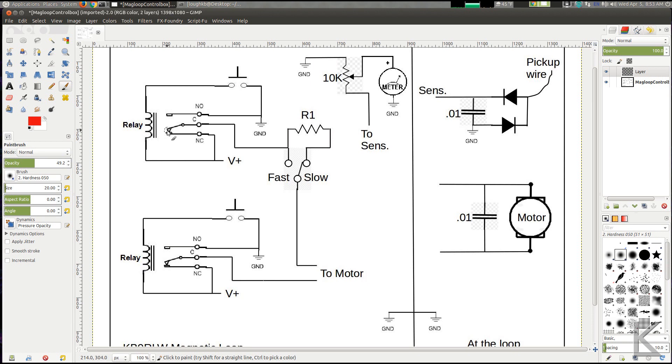The relays, by default, the normally closed contact are connected to the plus 12 volts coming in. So, when neither relay is turned on, both motor lines are at plus 12 volts.